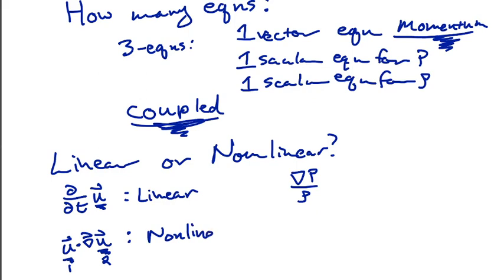This nonlinear term u dot grad u is not linear in the variables of our system. We additionally note that this is a quadratic nonlinearity, because we have a variable times another variable — it's like u squared in a sense. There are some nice properties to quadratic nonlinearities, as we'll learn, especially numerically.